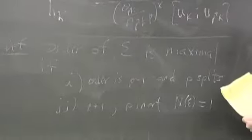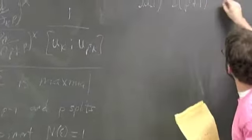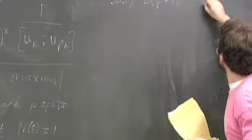and if it's twice that, otherwise, P is inert, and the norm is minus 1.